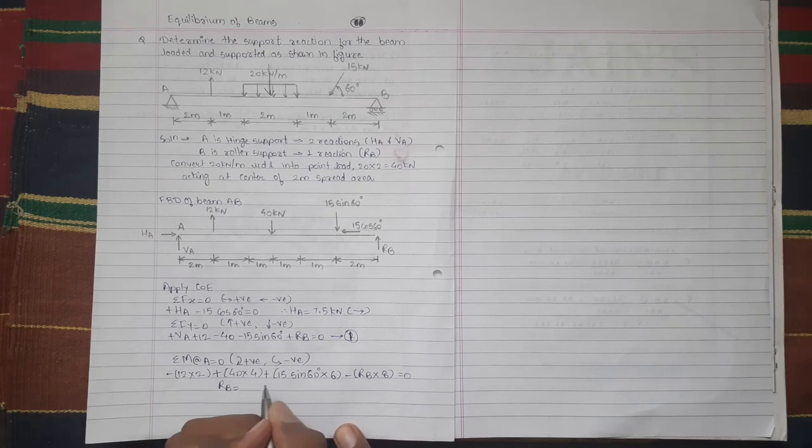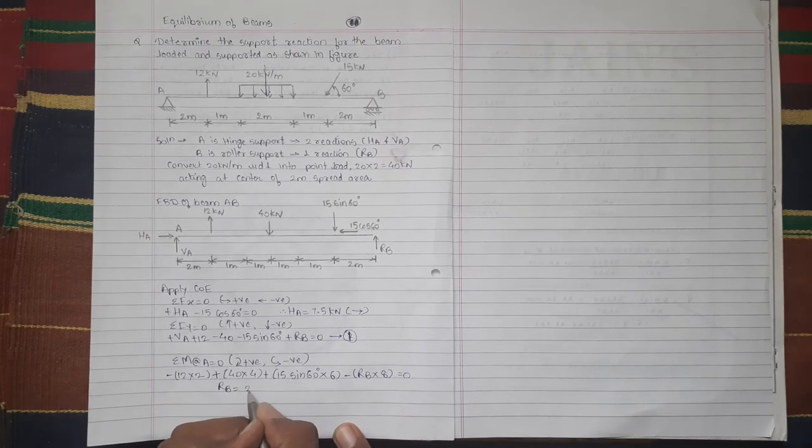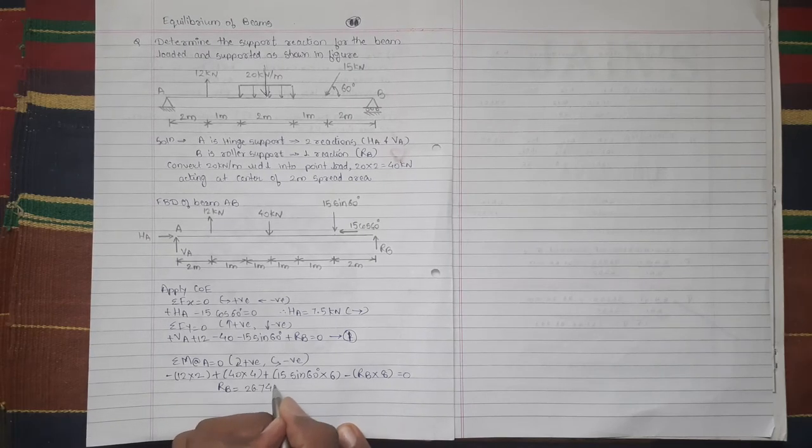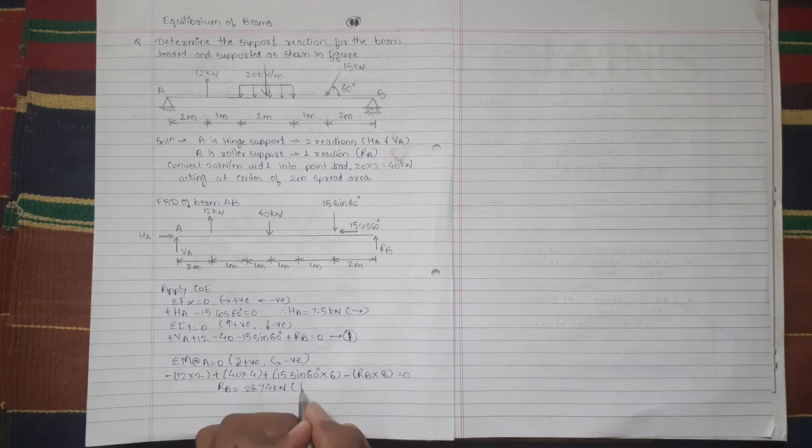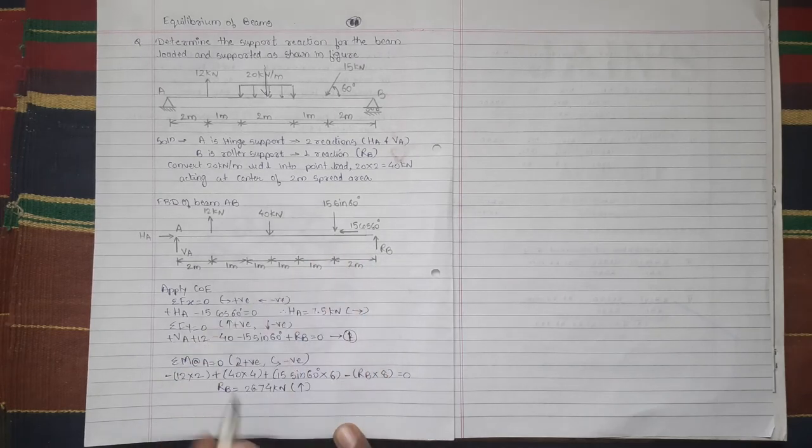So we get value of RB which is equal to 26.74 kN. Positive value means our assumption RB acting upward is correct.